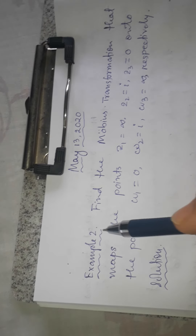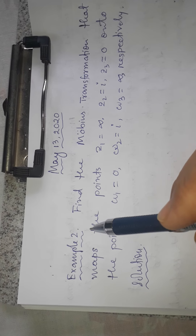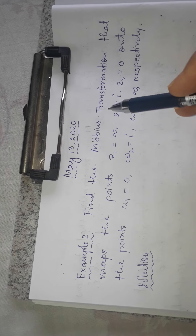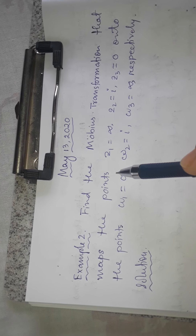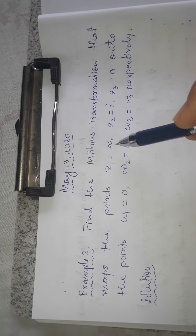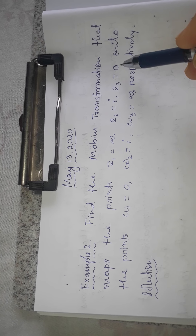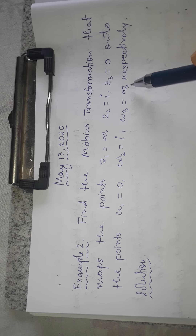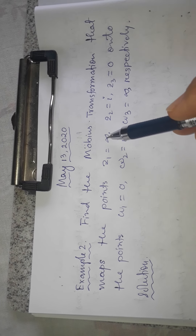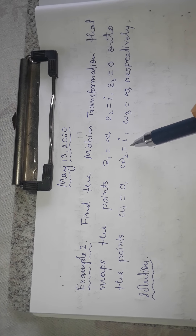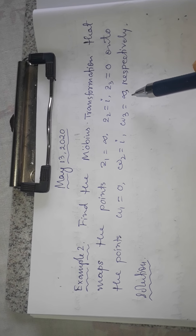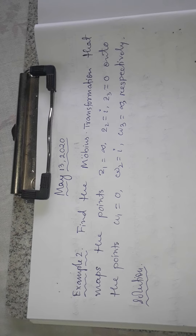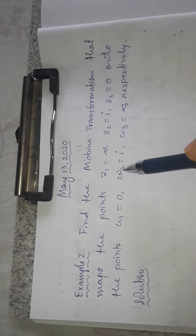Now I'm going to solve another problem: to find the Möbius transformation that maps the points ∞, i, and 0 onto the points 0, i, and ∞ respectively. That means ∞ is mapped to 0, i is mapped to i, and 0 is mapped to ∞. The point at infinity is considered both in Z as well as in W.